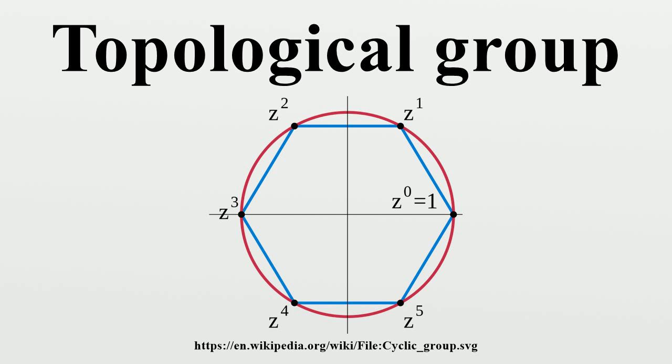with the topology inherited from R. This is a countable space and it does not have the discrete topology. For a non-abelian example,